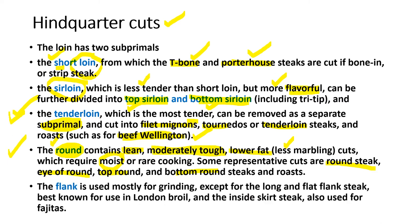Flank is a thin sheet of meat mostly used for grinding — for patties, sausage meat, etc. — except for the long flat flank steak. There is also the inside skirt steak. Both the flat flank steak and the inside skirt steak are used for fajitas.